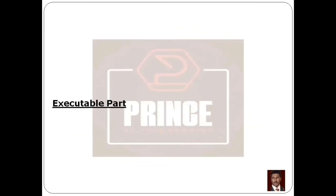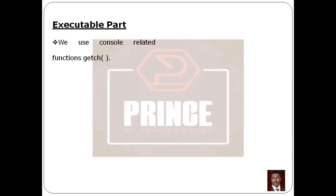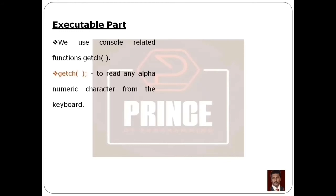The next thing to add is getch. The getch function is a console-related function used to read any alphanumeric character from the keyboard. It keeps the console screen open so the output remains visible. To use this function correctly, it is defined in the conio.h header file.